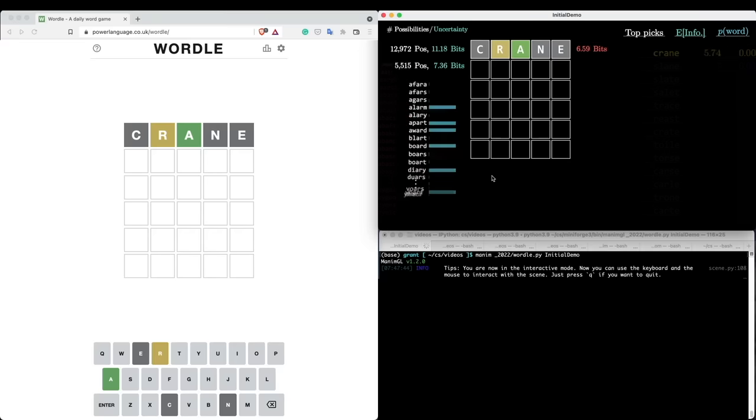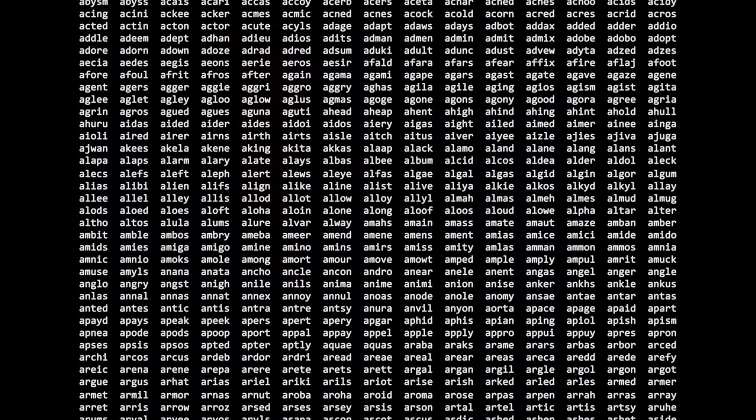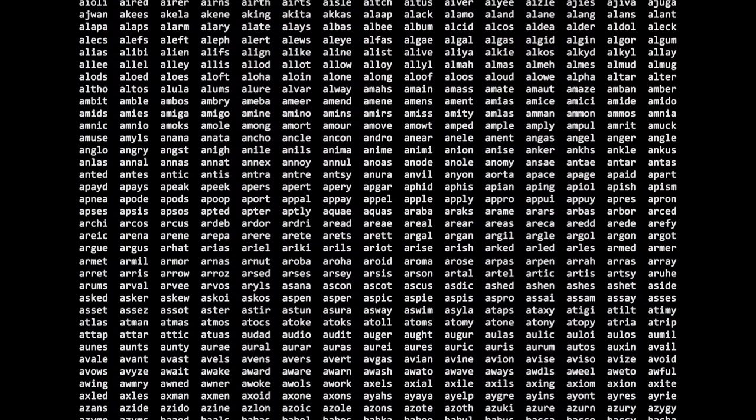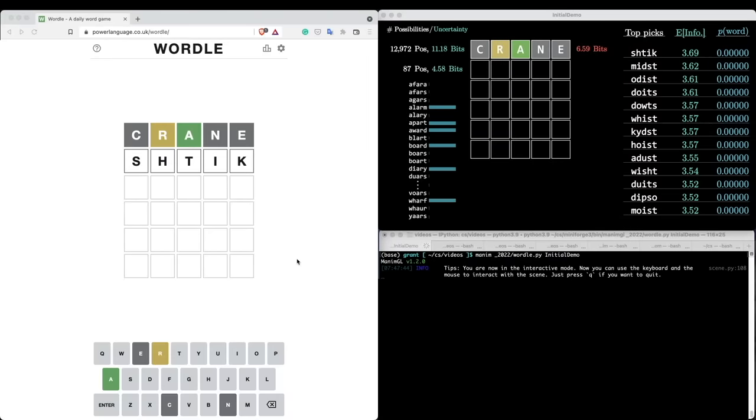So let me just go in and tell the Wordlebot that information. We started with crane, we got gray, yellow, green, gray, gray. Don't worry about all the data it's showing right now, I'll explain that in due time. But its top suggestion for our second pick is shtick. And your guess does have to be an actual five-letter word, but as you'll see, it's pretty liberal with what it will actually let you guess. In this case, we try shtick. And all right, things are looking pretty good. We hit the S and the H, so we know the first three letters.